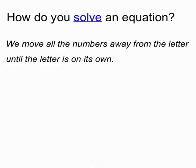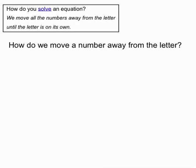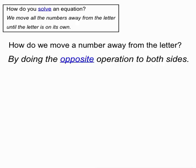Just a recap on how we solve an equation. We're looking to move all the numbers away from the letter until the letter is on its own. How do you move numbers away from the letter? We have to do the opposite operation to both sides.